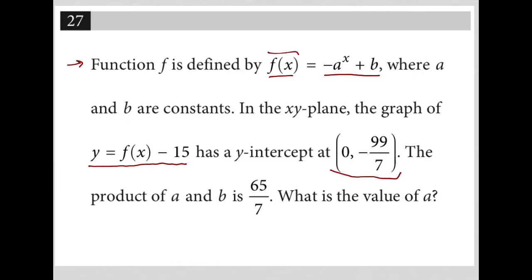I know that f(x) is negative a to the x plus b. The next bit of information is that we have y equals f(x) minus 15. So that would mean y equals f(x), but f(x) is the same as negative a to the x power plus b, and then minus 15.